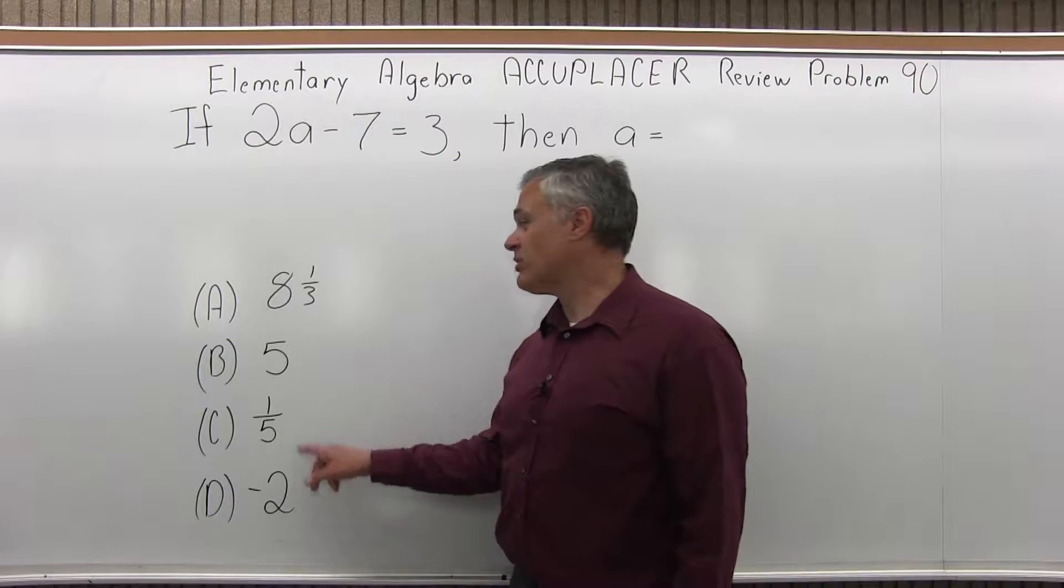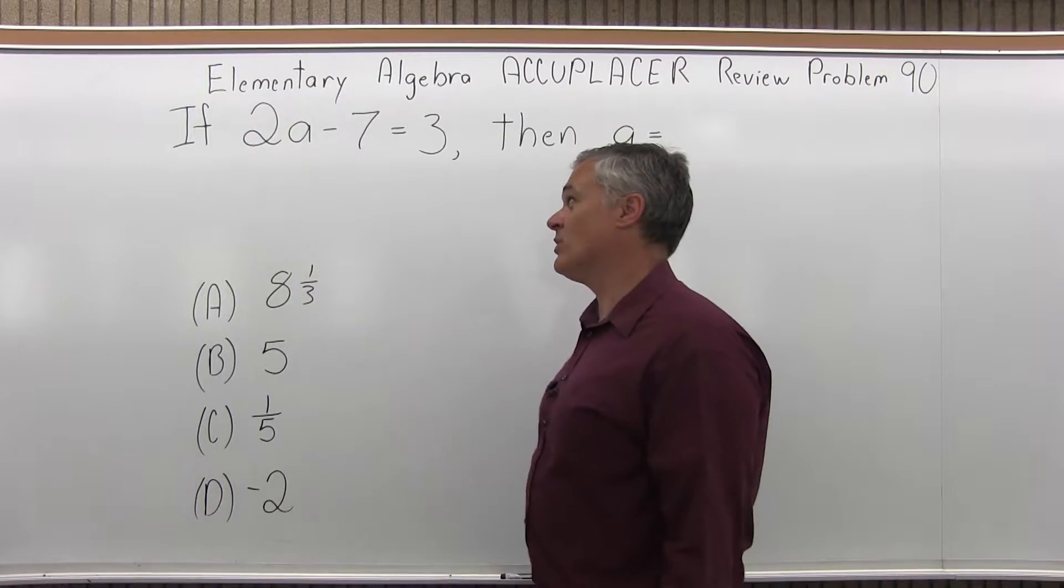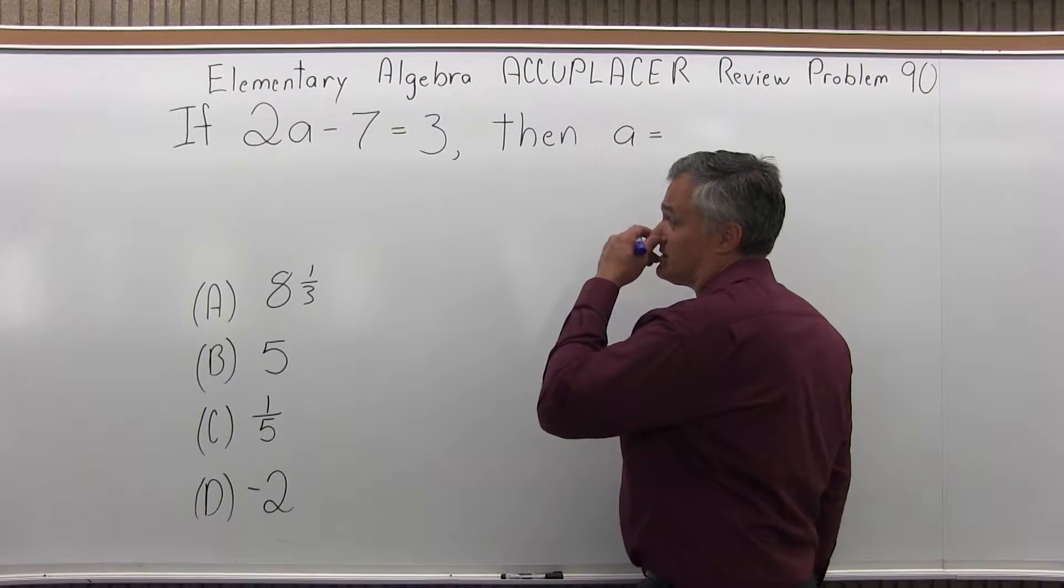So you can actually just start plugging the different options in for A and see when you would get 3 equals 3, and that would be the one. But the way you really want to do it is to solve it.